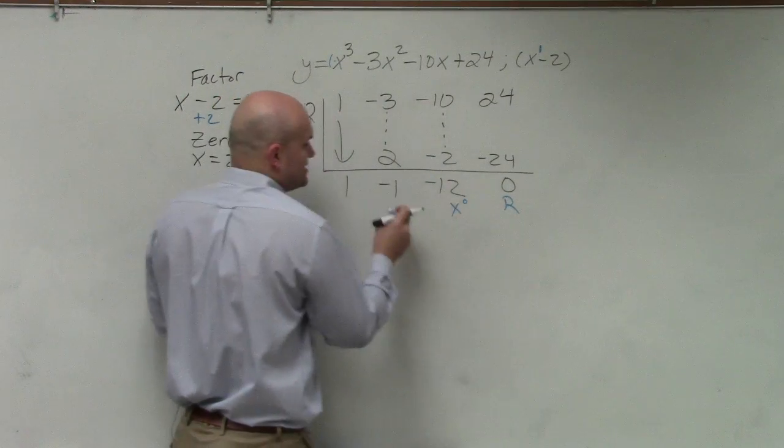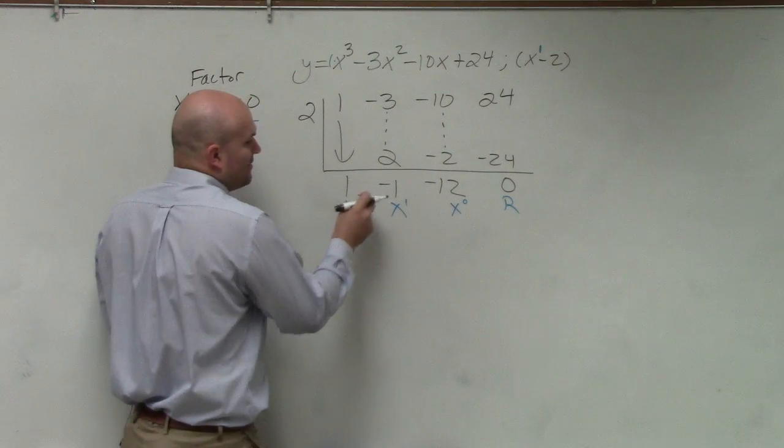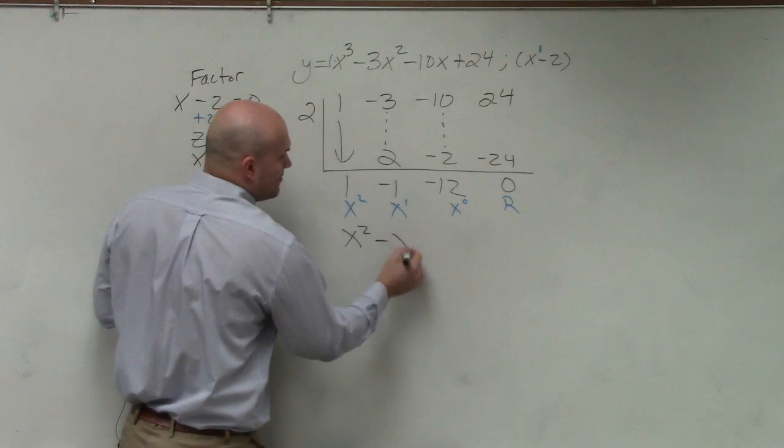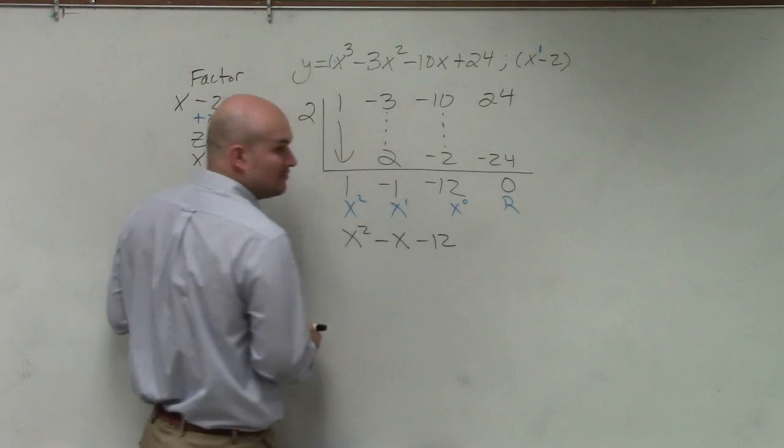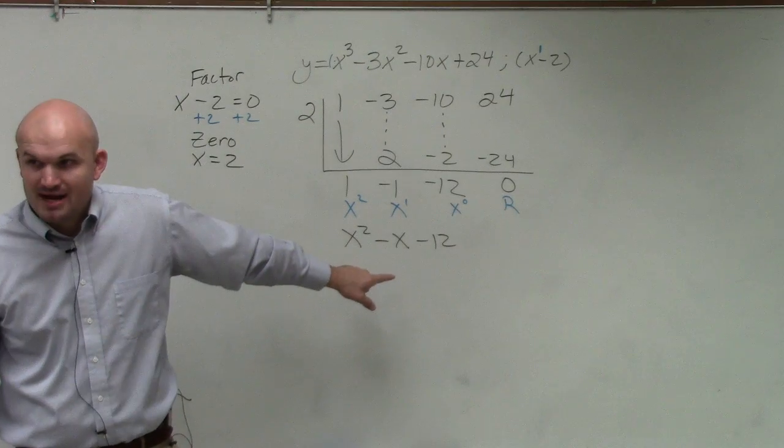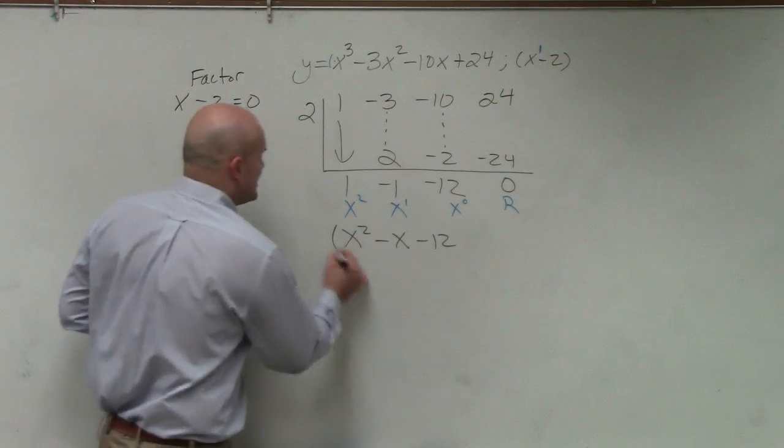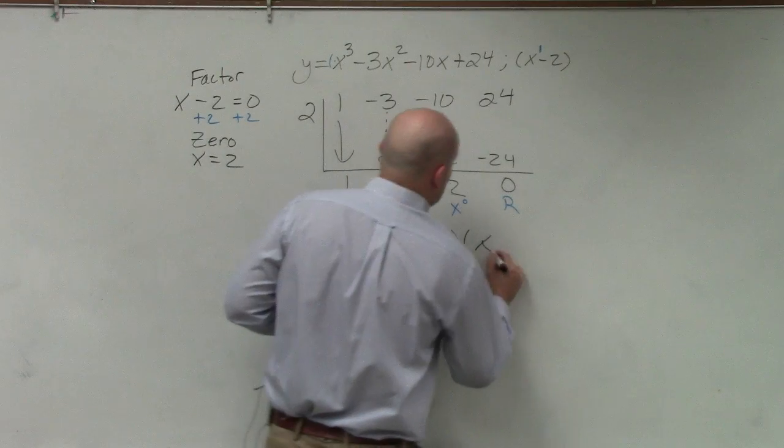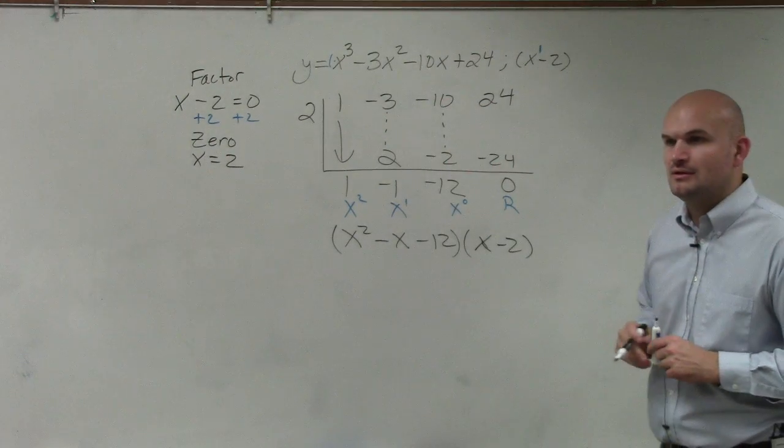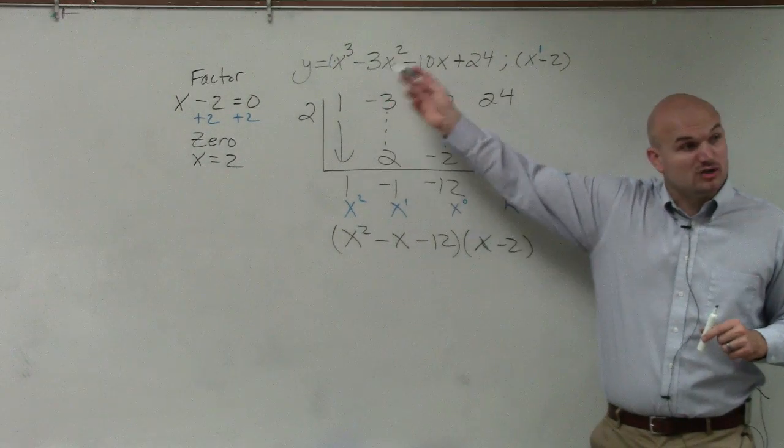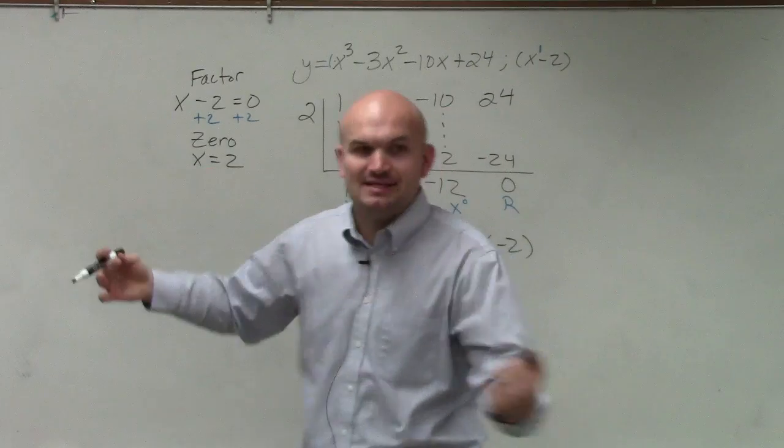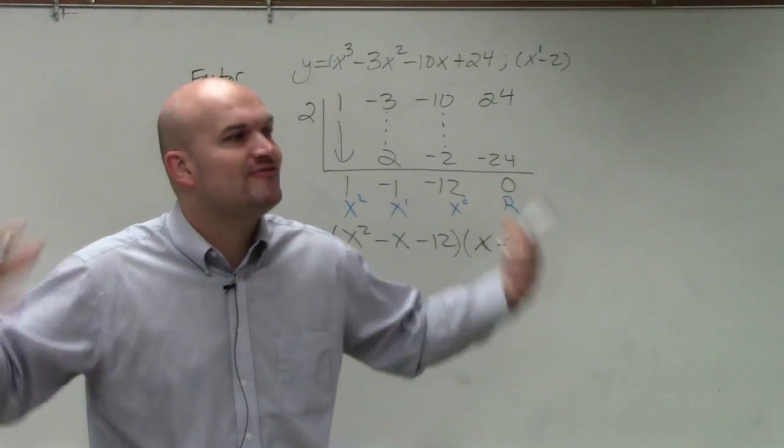So how can we write this then as a polynomial? Remember, that's your constant. That's your linear. And that's your quadratic. So my quotient is x squared minus x minus 12. But this is a factor, correct? So would it make sense then if I could take this factor times this factor? And what would those two factors equal? My original equation. But what is the question asking us today? The question is asking us to factor completely.